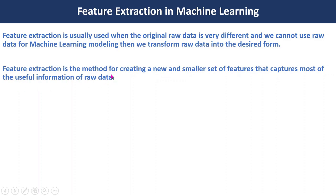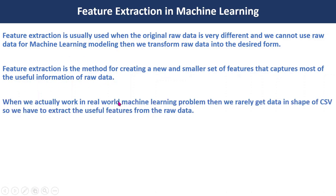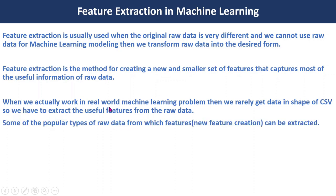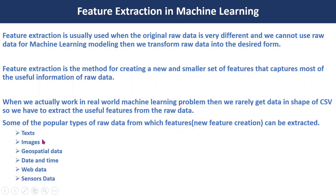As we know, in real-world machine learning problems we rarely use CSV data directly, so we have to extract some useful information from the raw data. There are different popular types of raw data from which features can be extracted or new features can be created. These are the types of raw data which we cannot directly use for machine learning modeling, so we will discuss them one by one.